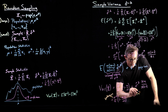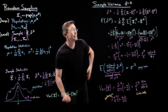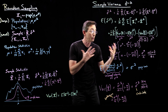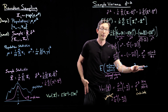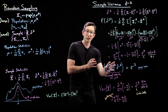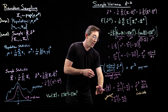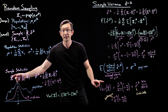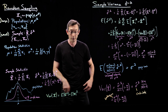Here, Var(x-bar) is written in terms of something I do have access to — I can calculate sigma hat squared from my sample. So the sample variance tells me really useful information about the population variance and also about the variance of my sample mean.